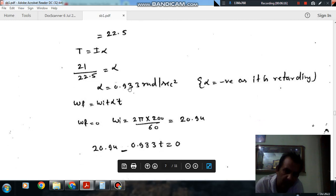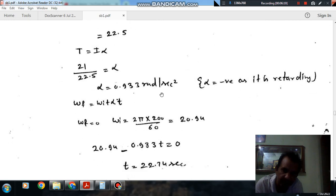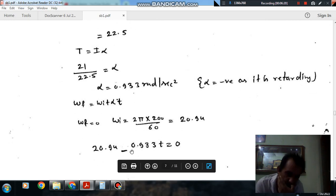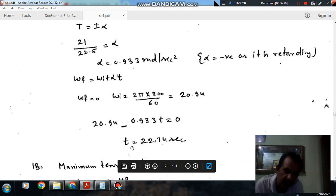Final velocity of drum is zero. Initial velocity of drum is 2 pi times 300 by 60. RPM is 300, so omega is 31.4 rad/s. Alpha is minus 0.93. Putting the values, we can find out t, so t comes out as 33.7 seconds.